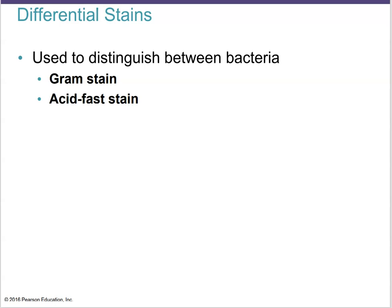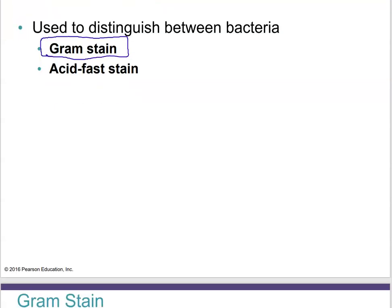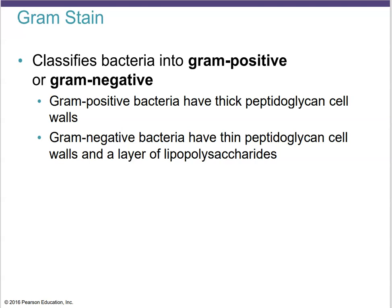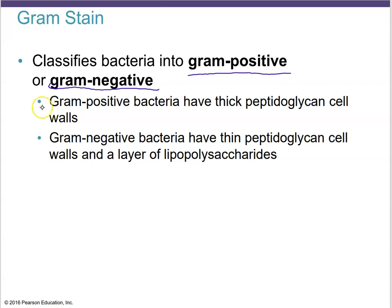The gram stain is a must-do for every microbiology student. The gram stain has four distinct steps, and its purpose is to classify bacteria into gram positive and gram negative categories based on their cell wall properties. Gram positive bacteria have thick peptidoglycan cell walls, and gram negative bacteria have thin peptidoglycan cell walls.